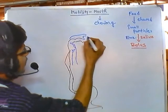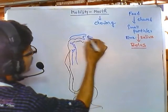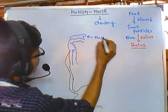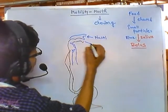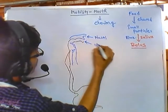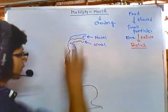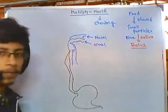So this is the nasal passage and this is the oral passage. Both of these passages are aligned there.